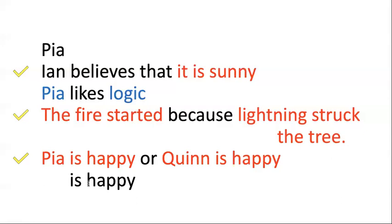"Is happy" is different. The only way to make a grammatically well-formed sentence with "is happy" is to put a name or noun phrase before it — I can't say "Pia is happy is happy" or "the fire started is happy." Those are ungrammatical. I have to put some kind of noun-type language there, like a name or a definite description such as "the tallest person in the room." So the correct answers were three sentential connectives from those examples.